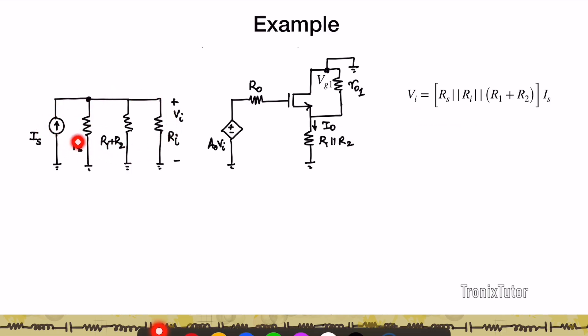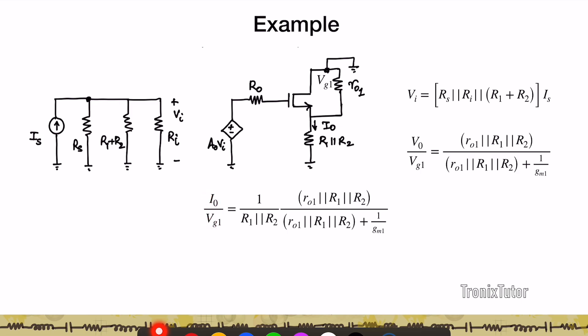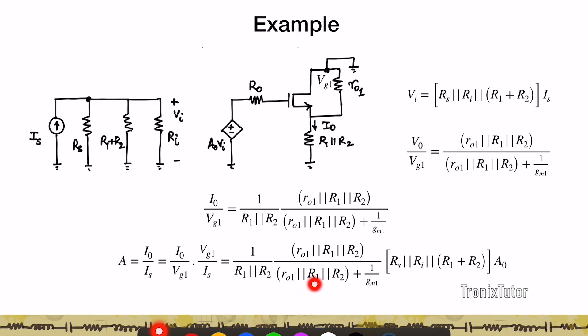We can write Vi as the signal flowing through the parallel combination of those three resistances. The voltage V0 divided by Vgs1 corresponds to a source-degraded common-source amplifier, giving that expression. Therefore I0 divided by Vg1 is derived, and the open-loop gain translates to I0 divided by Vg1 multiplied by Vg1 divided by Is — that large expression. Once the open-loop gain A and feedback factor beta are known, all other closed-loop parameters can be calculated.